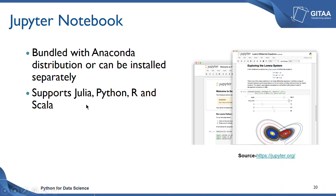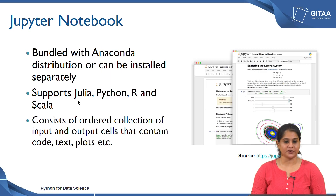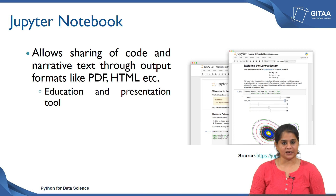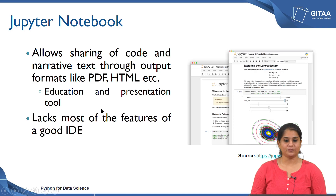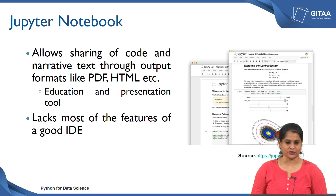The name Jupyter takes the first two letters from Julia, the next two from Python, and then R. It consists of an ordered collection of input and output cells that can contain narrative text, code, plots, and any kind of media. A key feature is that it allows sharing of code and narrative text through output formats like HTML, Markdown, or PDF, making it useful for education and presentation. However, Jupyter is deficit of the important features of a good IDE — specifically a source code editor, a compiler, and a debugger.